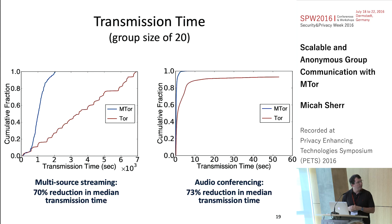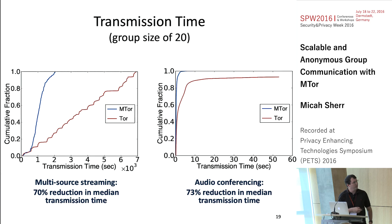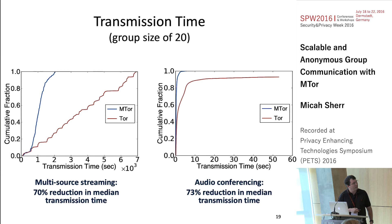Transmission time from the client-centric view: these are cumulative distribution functions on the y-axis with transmission time in seconds on the x-axis. On the left graph — multi-source streaming, everybody sending big chunks of data — our savings are significant: a 70% reduction in the median. For audio conferencing, with vanilla Tor about 10% of connections just won't work because latency is so high. For VoIP, anything above two seconds is useless, so the more important measure is the cutoff at the top of the distribution.